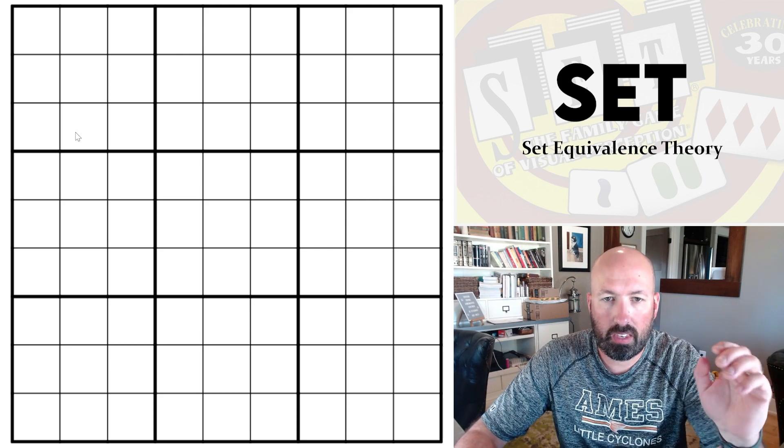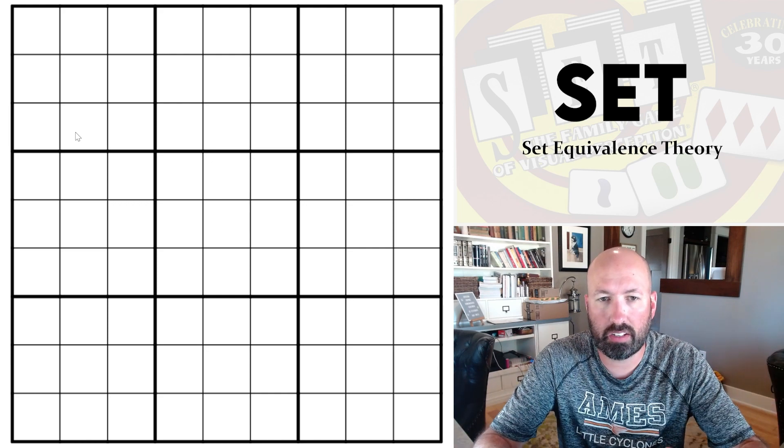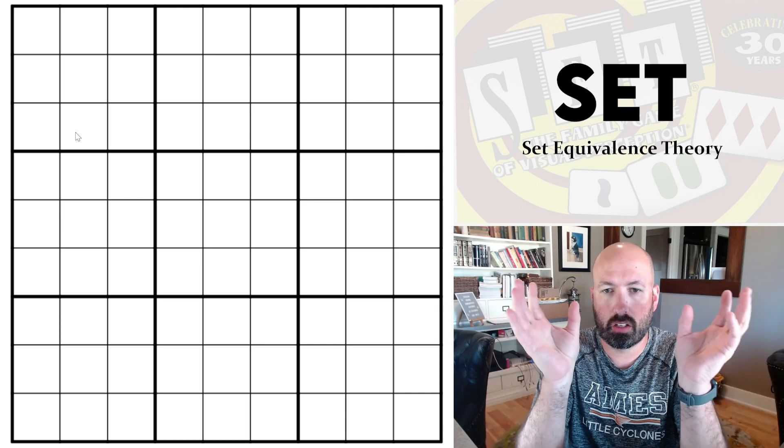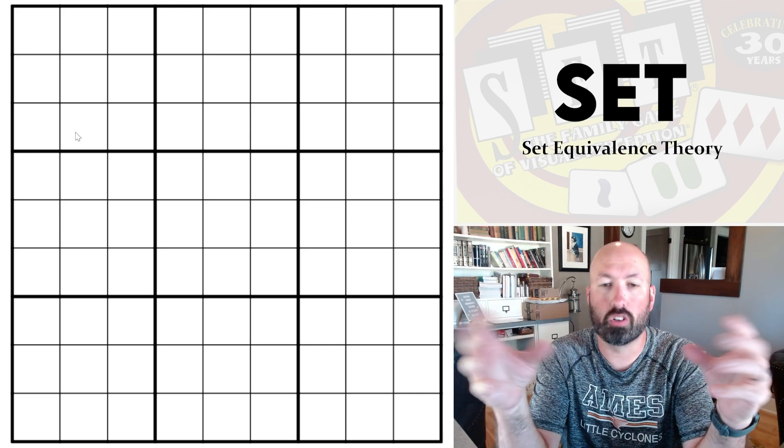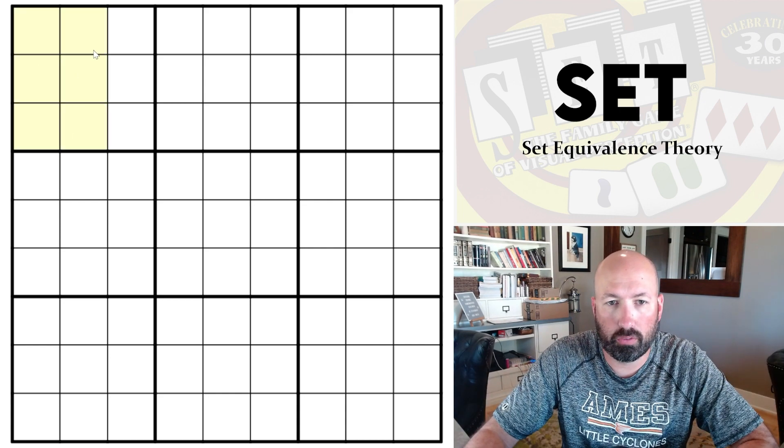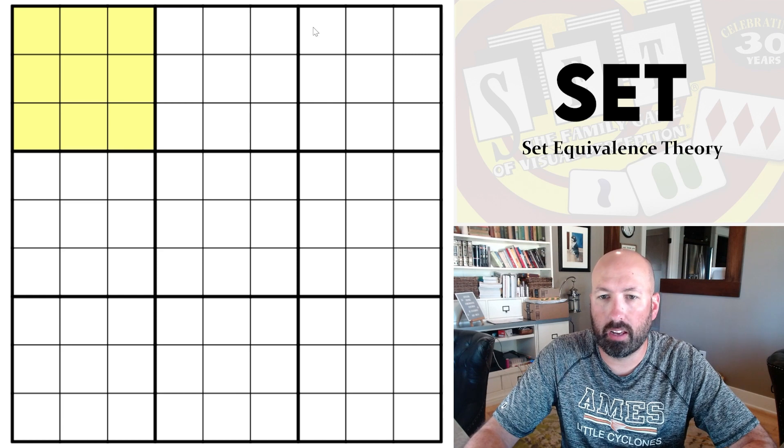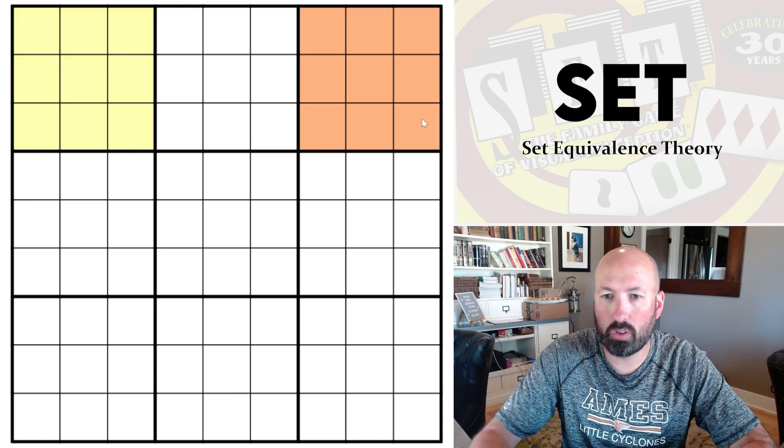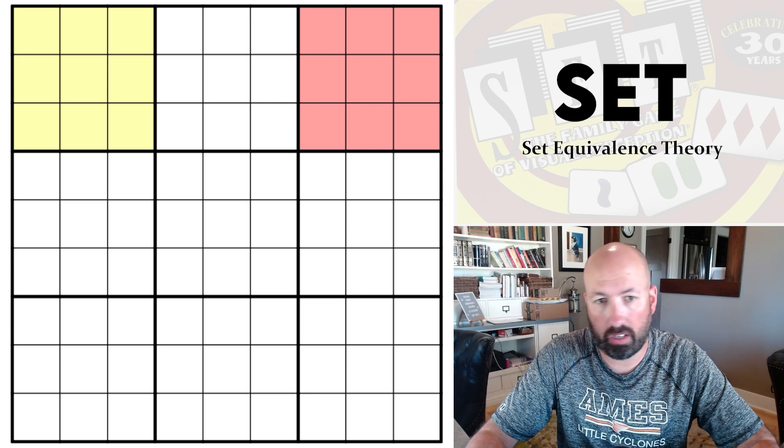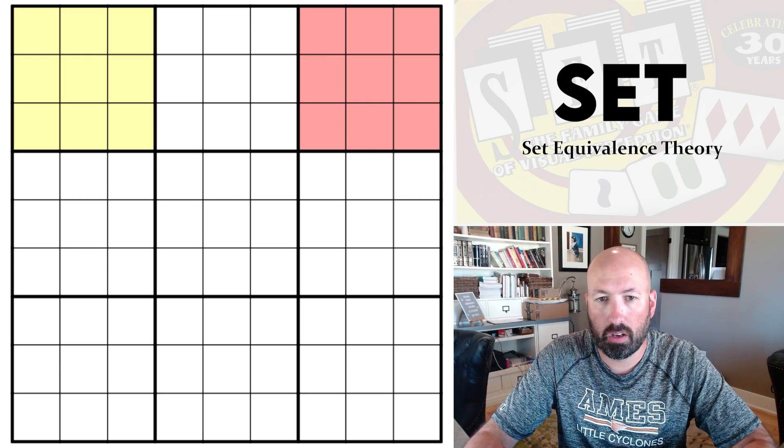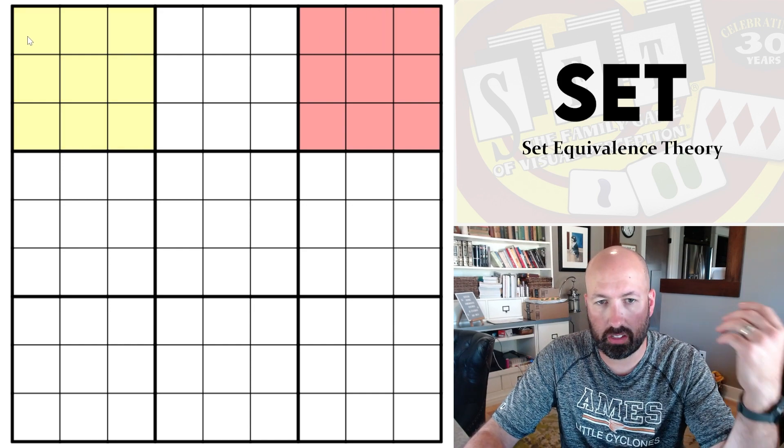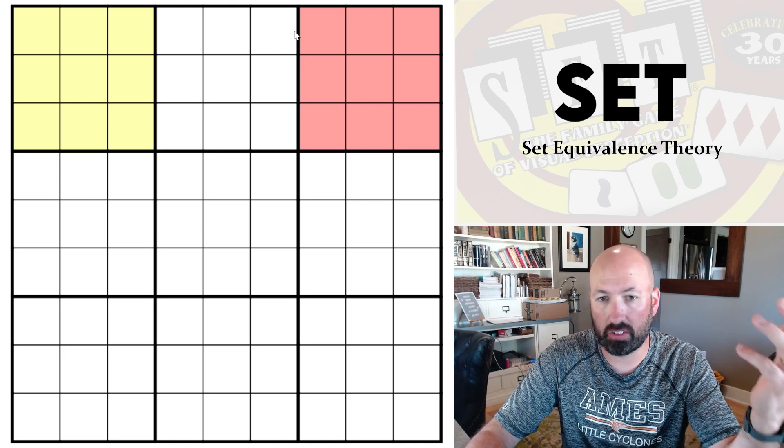So at a very basic level, set equivalence theory is just saying we're taking two sets, generally two sets of cells. For example, box one could be a set and box three could be another set. We have two different sets of cells and we're saying that those sets are equivalent. Obviously in this situation, box one is equivalent to box three because we know that every box has the digits one through nine.